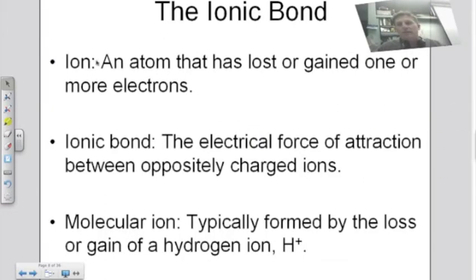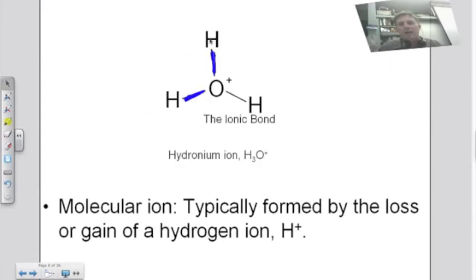We've discussed ions in great detail. When metals and nonmetals come together, they form an ionic bond. There's one thing we didn't mention: the idea of a molecular ion, typically formed by the loss or gain of a hydrogen ion. Here's water — H2O, two hydrogens and one oxygen. With an extra hydrogen, this forms a molecular ion. The hydronium ion is H3O+, with a positive one charge. We'll discuss this molecular ion more later in the unit.